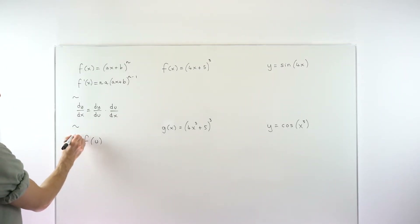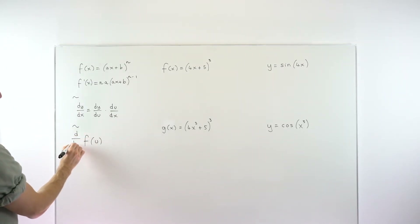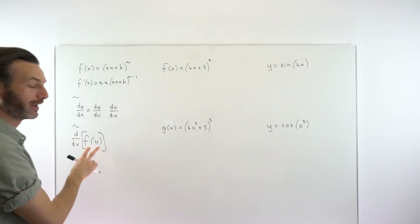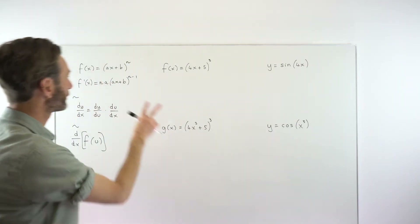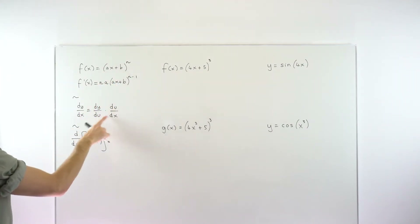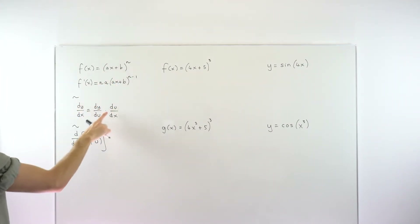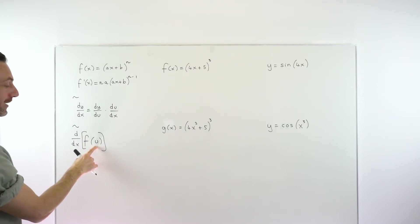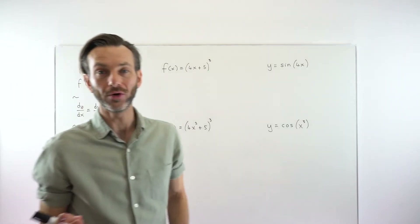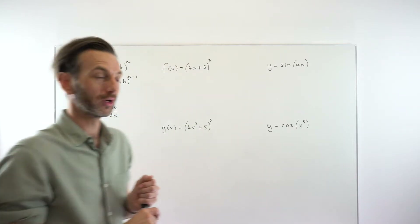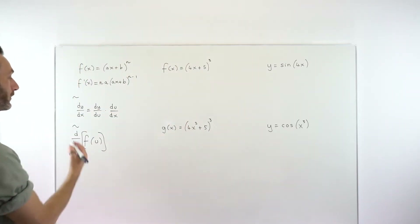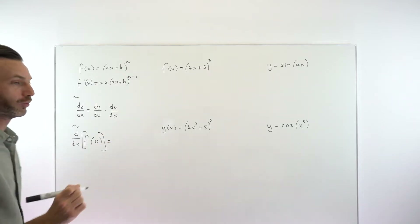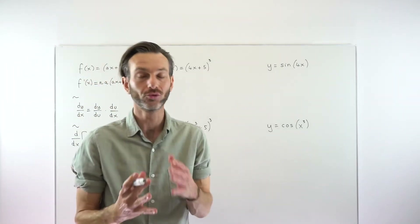Let's say we want to differentiate this f of u. All composite functions look like f of u — you've got a function on the outside, f, a function inside, u, and that's what you're differentiating. The setup already looks more like what you'll see in reality. The chain rule tells you to differentiate the overall outside function, differentiate the inside function, and multiply those two together — really, really simple.